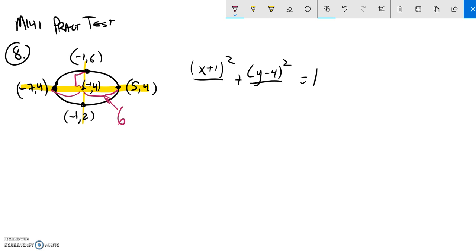And similarly, looking this way, from 4 up to 6, that's a 2. So, since I have those pieces, I know that my offset in the x direction is 6.